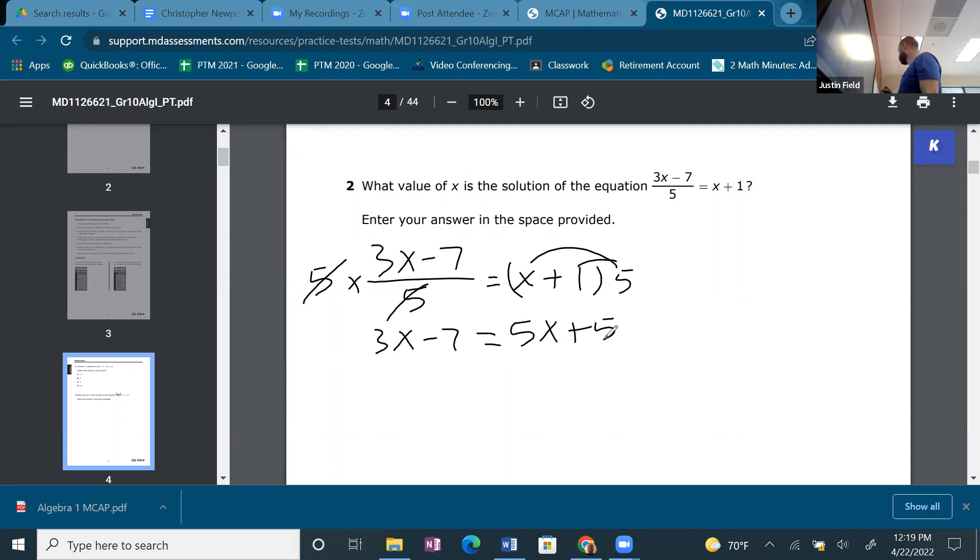Okay, so now we'll get our variables on our left and numbers on the right. And if we go over the line, we'll change the sign. 3x. This guy's going over the line, so -5x. This guy's going over the line, so this is going to be a +7. That's -2x. That's 12.